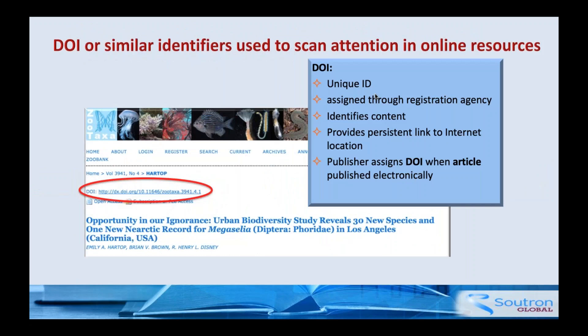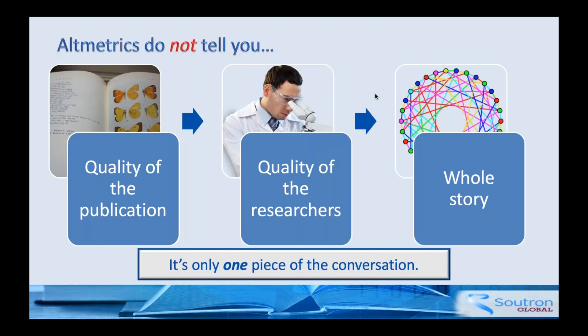How do these tools work? Computer software loves unique identifiers, so the digital object identifier — the DOI — along with similar IDs like a PubMed ID, are used by these systems to capture information by scouring the online arena and pulling it in. However, these tools do not necessarily indicate the quality of the publication, and certainly not the quality of the researcher. That's what researchers fear: being judged by numbers rather than by the quality of what they're doing. It's only one piece of the conversation.